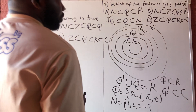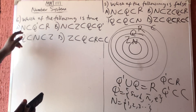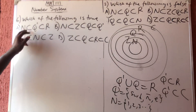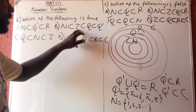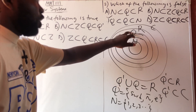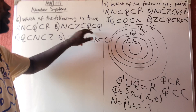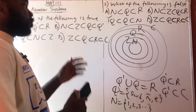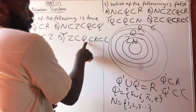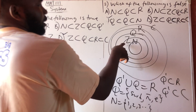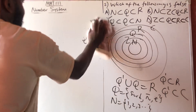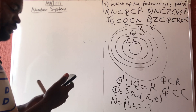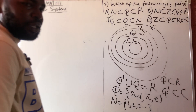So option A is wrong because N cannot be gotten from Q prime. Option B is partially right but ends incorrectly. Option C says Q is a subset of N — Q is not found inside N, so that is wrong. Option D says Z is a subset of Q, Q is a subset of R, and R is a subset of C — that is correct. So the answer is D. That concludes the number system section — go and watch the next video on elementary set theorem. Thank you very much and God bless you.